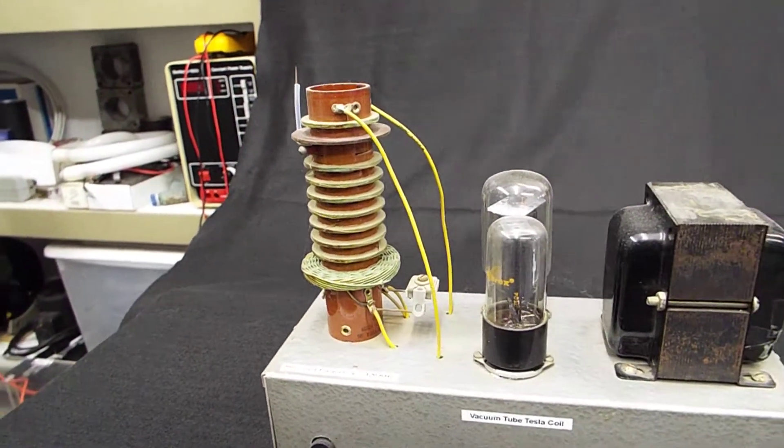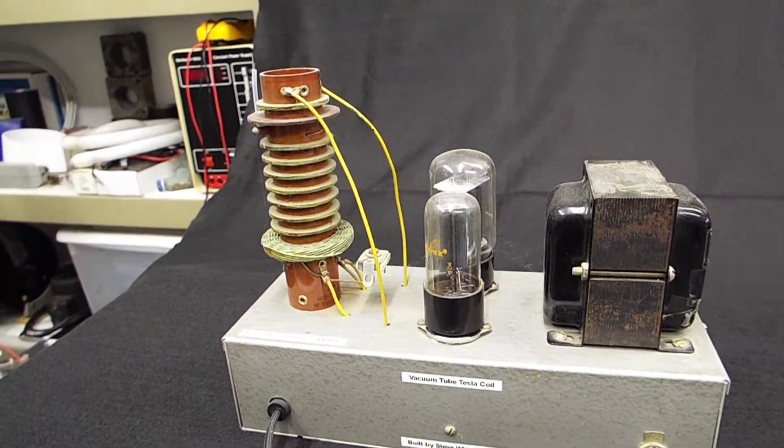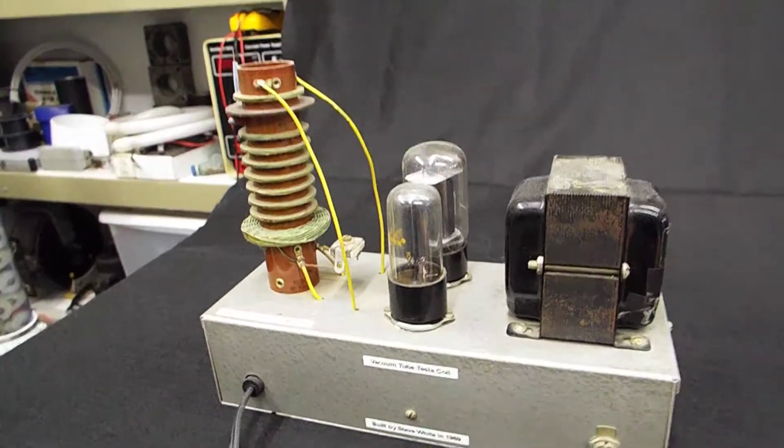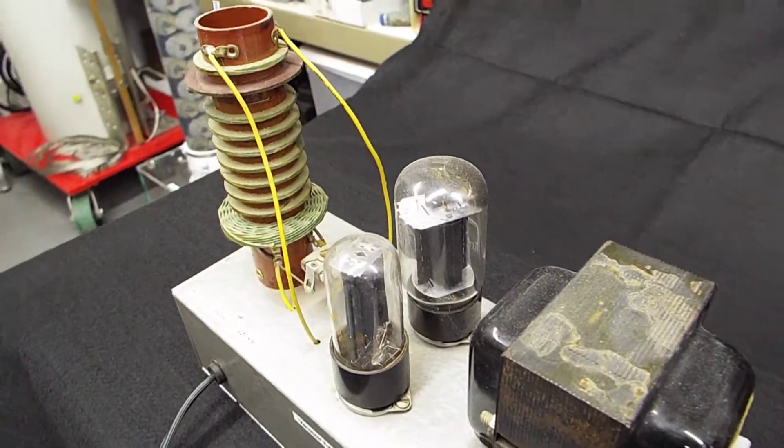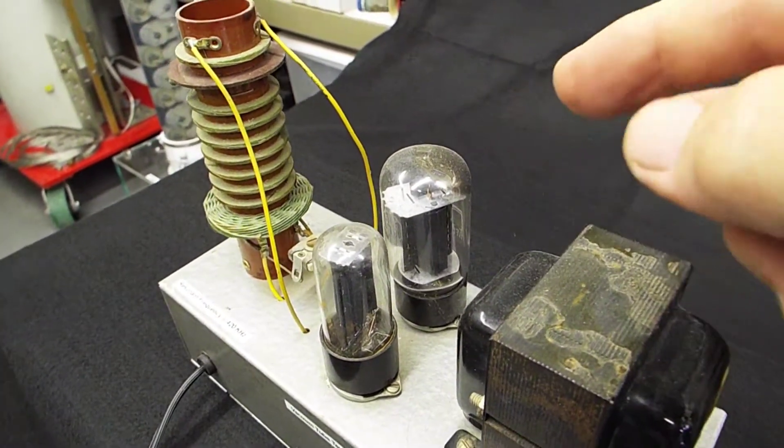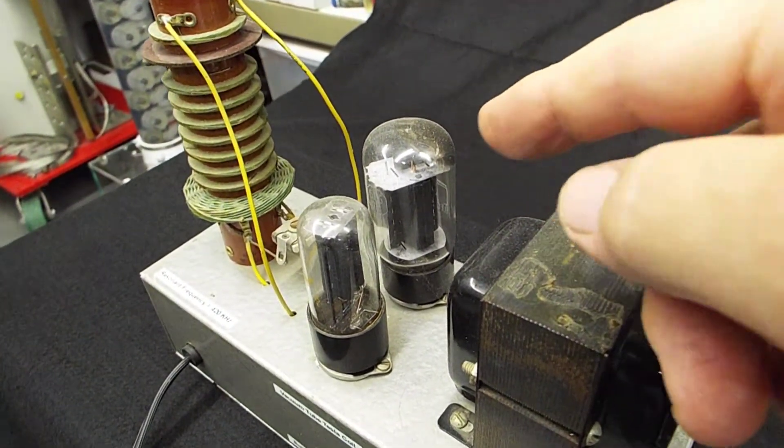But this vacuum tube Tesla coil uses a 6L6 beam power tetrode tube, which is this, to do the actual oscillation.